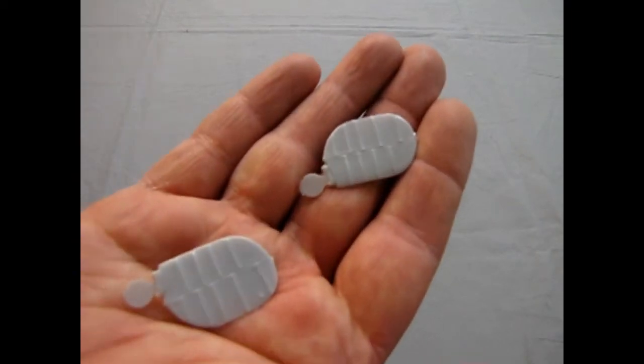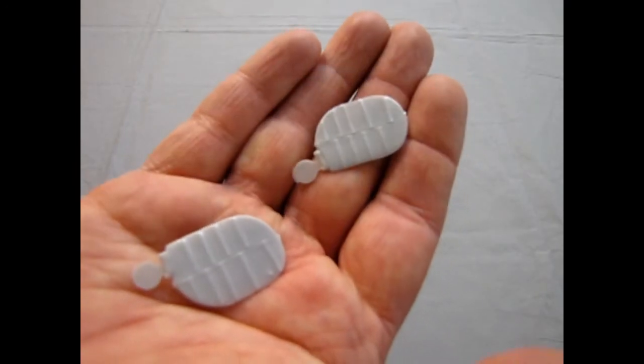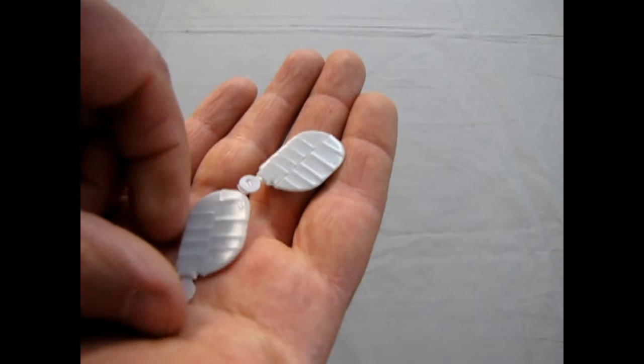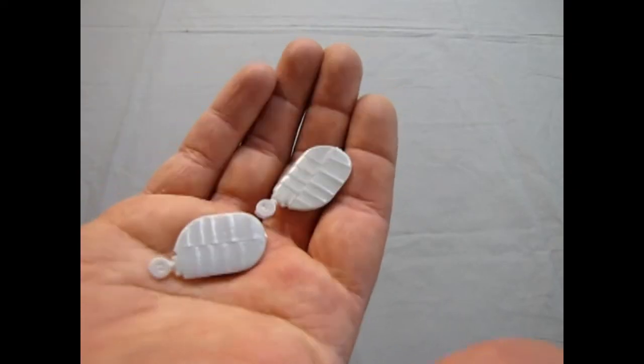And these are the tail rudders, which again you can see they have the ribs in them, quite predominant.